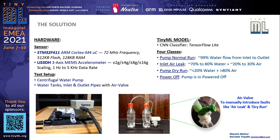The model that we built was a CNN convolutional neural network classifier with four classes to classify from: whether the pump is running normal, or it has any fault like an air leak, or a pump dry run, or whether it's powered off.